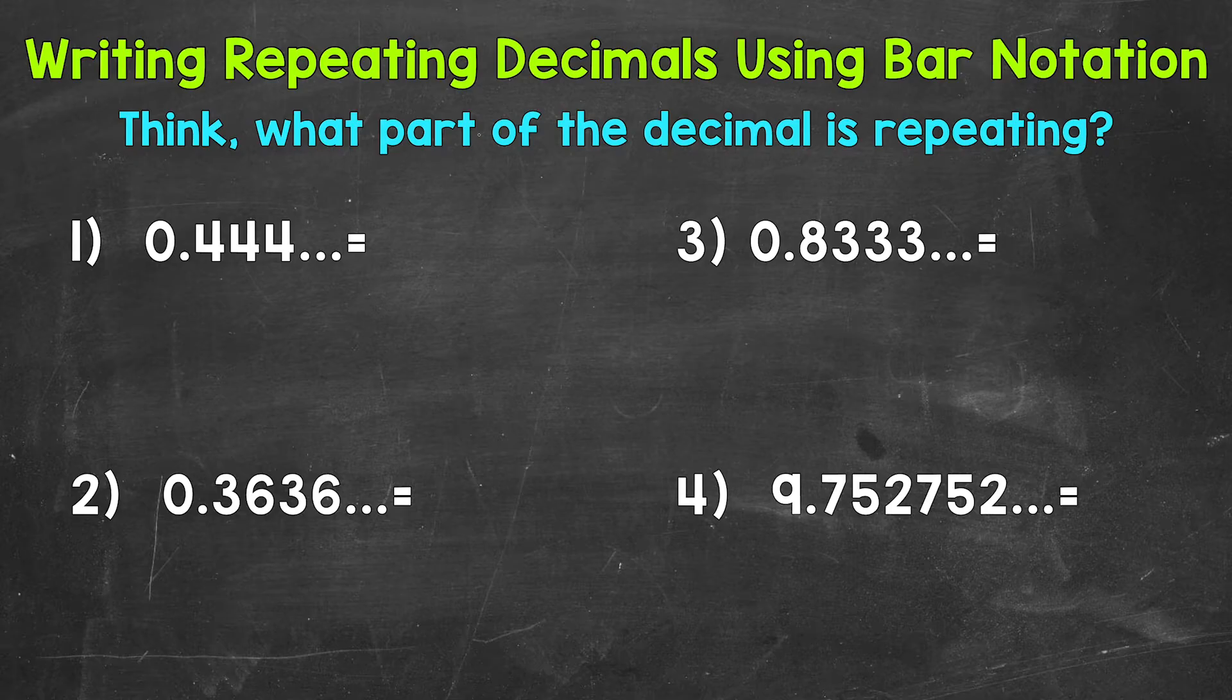Simply put, bar notation is a shorter way to write repeating decimals. Because after all, repeating decimals never end, so we need a shorter way to write them out.